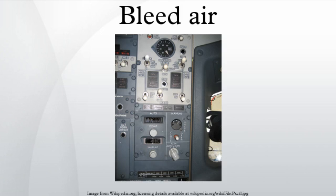Engine bleed air comes from the high-stage or low-stage engine compressor section. Low-stage air is used during high-power setting operation, and high-stage air is used during descent and other low-power setting operations.